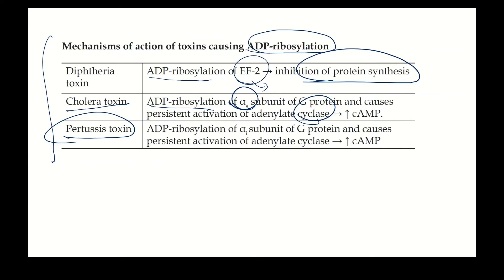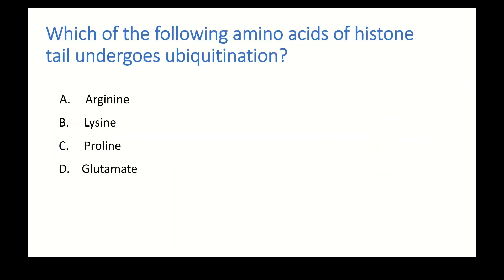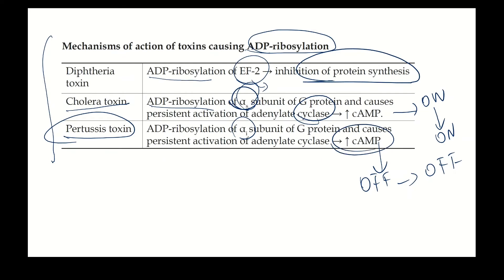Pertussis toxin causes ADP ribosylation of the inhibitory alpha subunit (alpha-I) of G protein. Cholera toxin acts on the stimulatory type; pertussis acts on the inhibitory type. Normally the inhibitory type inhibits signaling — now that inhibition is itself inhibited. The off-switch is kept off, so there is also continuous production of cyclic AMP and pseudomembrane formation. Summary: diphtheria toxin — ADP ribosylation of elongation factor 2; cholera toxin — ADP ribosylation of alpha-S; pertussis toxin — ADP ribosylation of alpha-I.